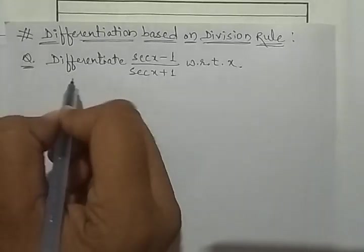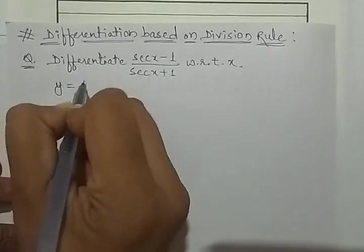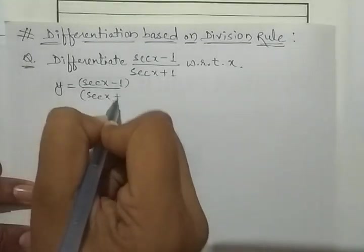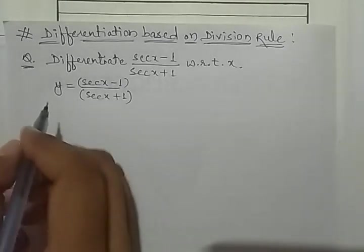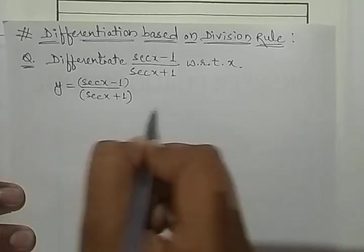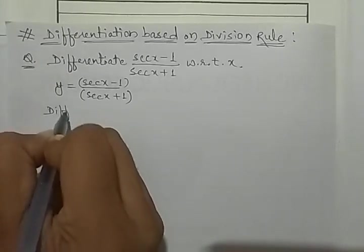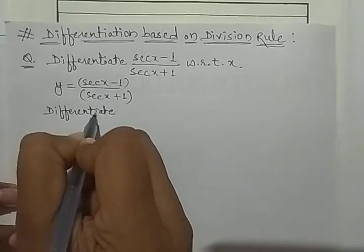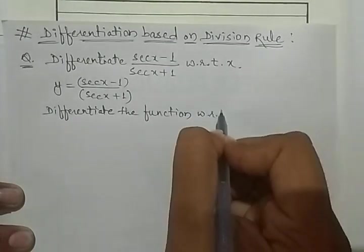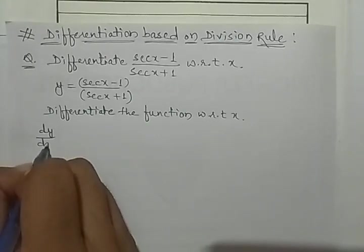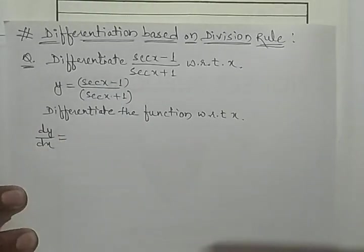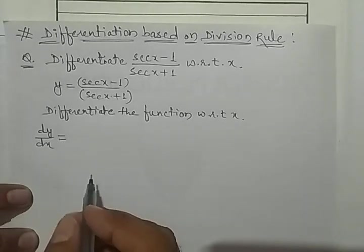Differentiation based on division rule. We have given a function y is equal to sec x minus 1 upon sec x plus 1, and we have to differentiate it with respect to x. dy by dx: two functions are there with a division sign between them, so we will apply the division rule.